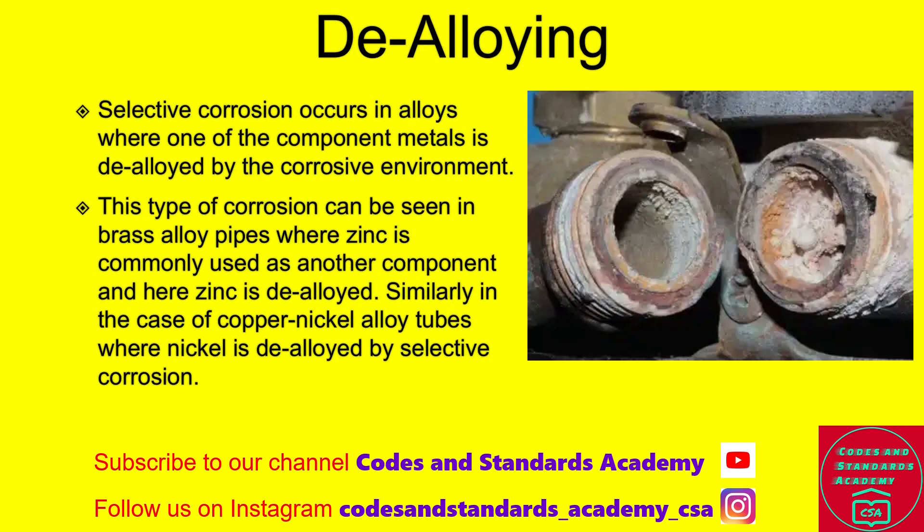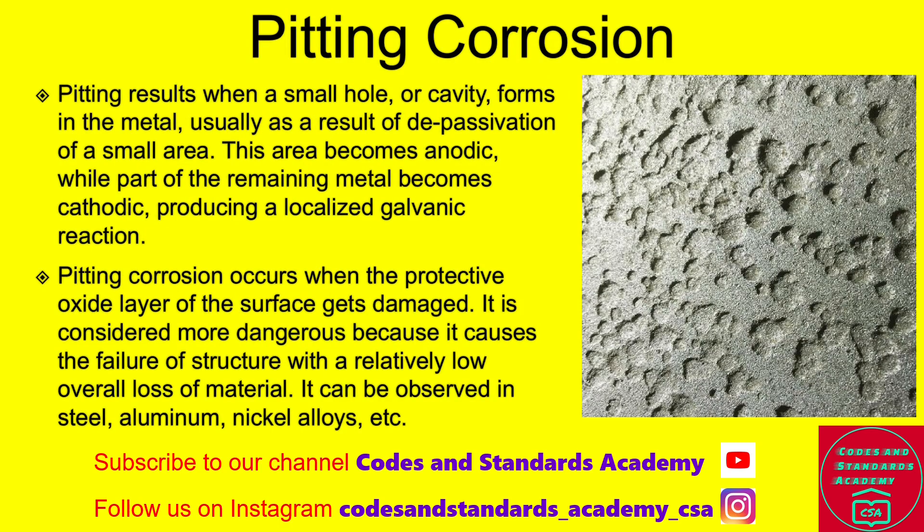De-alloying or selective leaching: selective corrosion occurs in alloys where one of the component metals is de-alloyed from the corrosive environment. This type of corrosion can be seen in brass alloy pipes where zinc is commonly used as another component — here, the zinc is de-alloyed.